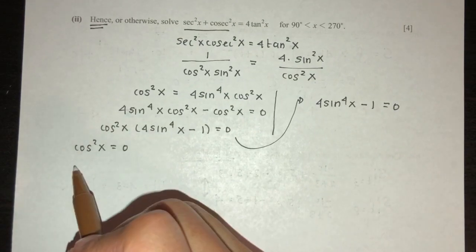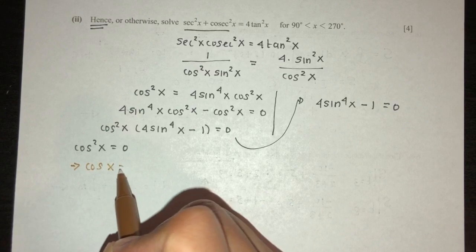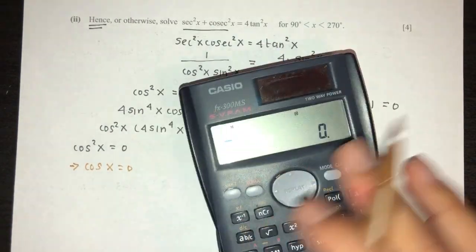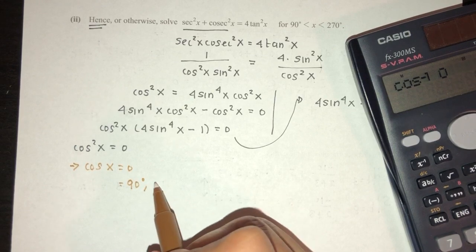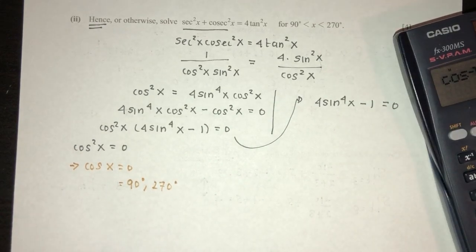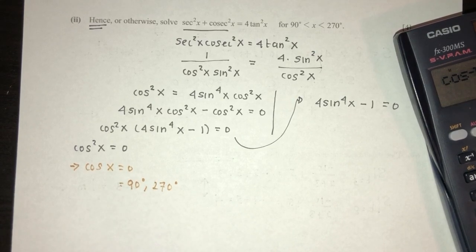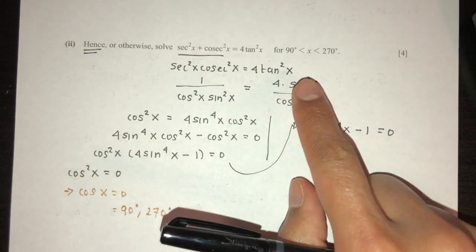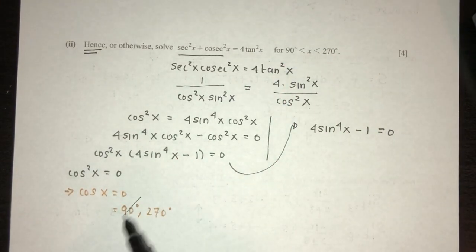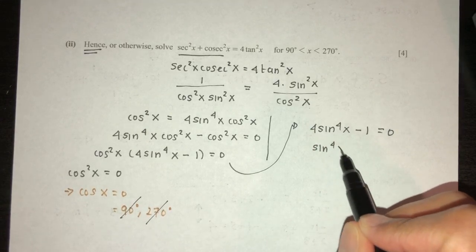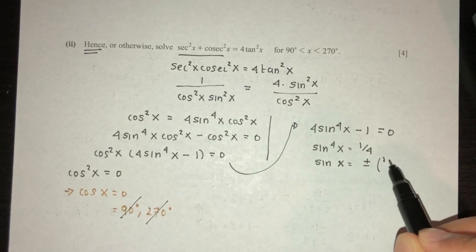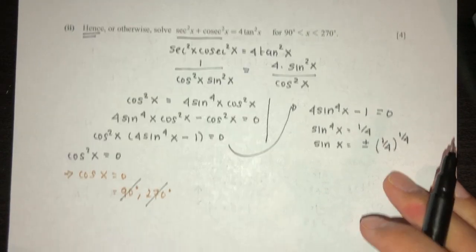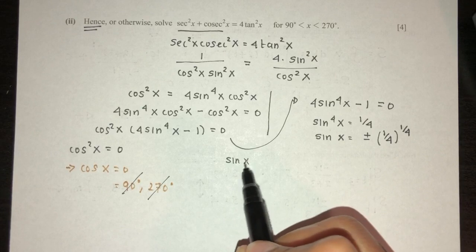From cos²x = 0: cos x = 0 gives x = 90° or 270°, but these are excluded from the domain. From 4sin⁴x − 1 = 0: sin⁴x = 1/4, so sin x = ±(1/4)^(1/4). Finding the reference angle θ = sin⁻¹((1/4)^(1/4)) = 45°.